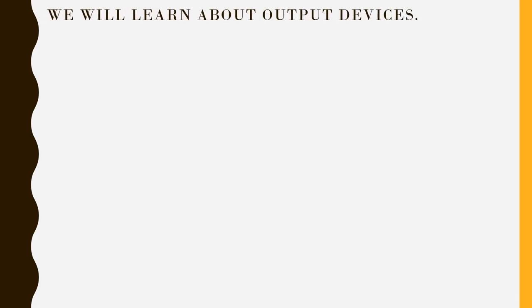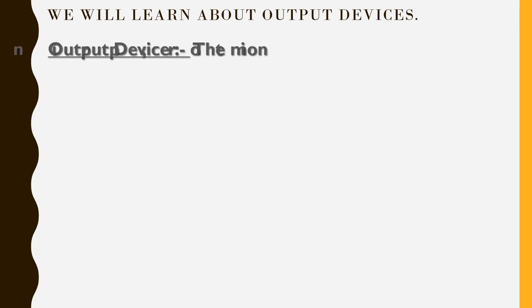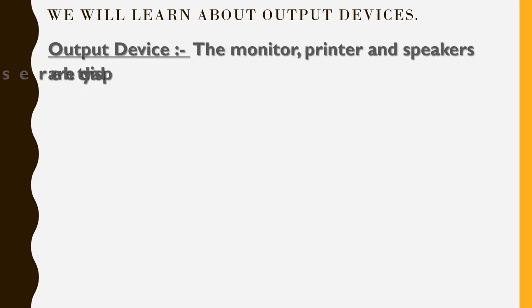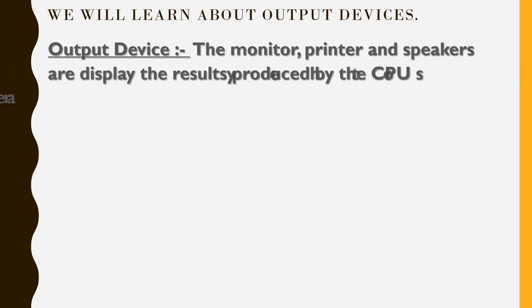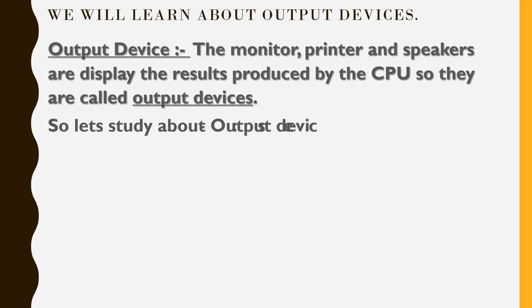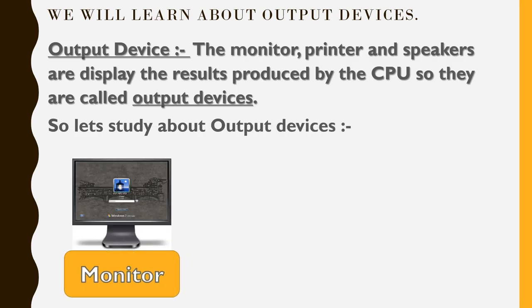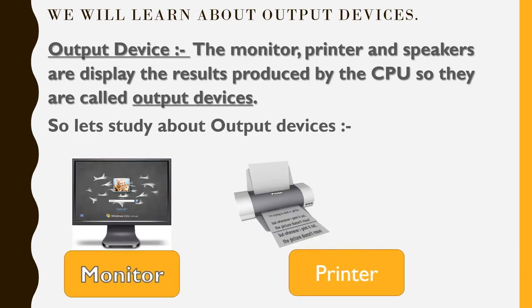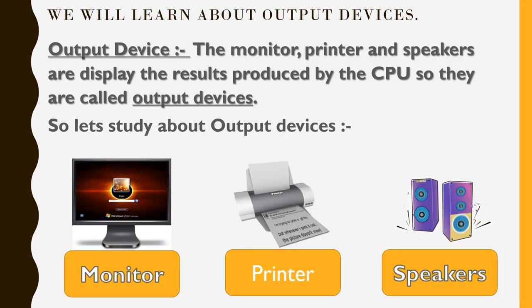Now we learn about output devices. The monitor, printer, and speakers display the result produced by the CPU, so they are called output devices. Let's study about output devices: monitor, printer, and speakers.